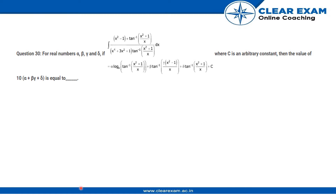Here is another question. For real numbers alpha, beta, gamma, and delta, if the integral of (x² - 1 + tan⁻¹((x² + 1)/x)) / (x⁴ + 3x² + 1) · tan⁻¹((x² + 1)/x) dx equals the given equation, where c is an arbitrary constant, then the value of 10 times (alpha + beta·gamma + delta) is what we need to find.